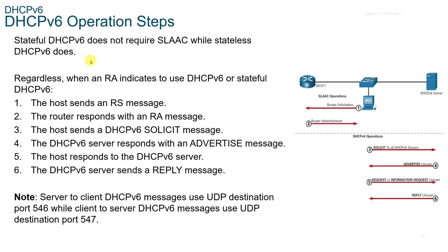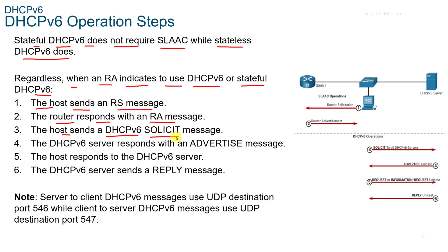8.3 DHCPv6. There are six steps to the DHCPv6 operating process. Stateful DHCPv6 does not require SLAAC, while stateless does. When an RA indicates to use DHCPv6 stateful, the host sends an RS message, the router responds with an RA message, the host sends a DHCPv6 Solicit message, the V6 server responds with an Advertise message, the host responds, and then the DHCPv6 server sends a Reply message. Note: server-to-client V6 messages use UDP destination port 546, while client-to-server DHCPv6 messages use UDP destination port 547 — it would be a good idea to know those two ports for an exam.